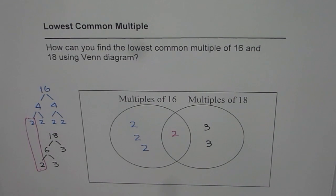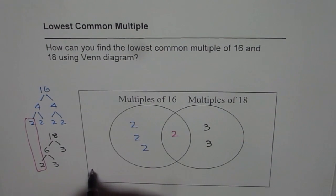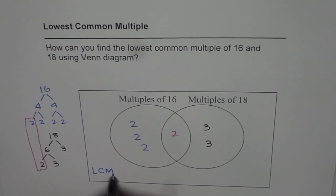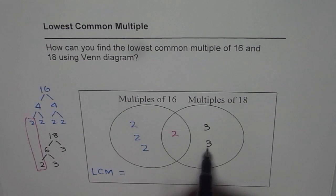Now, how does that help to find the lowest common multiple of 16 and 18? Can you tell me that? Think about it. So the lowest common multiple is equal to the product of all these numbers.